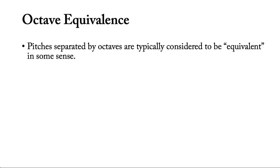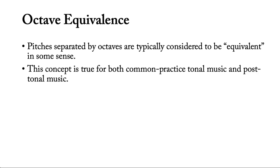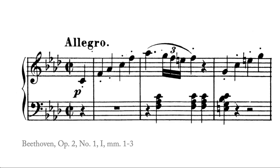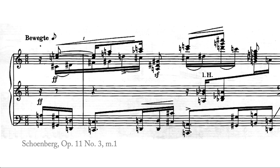This is called octave equivalence, and it's something that is considered to be part of many different kinds of music throughout the world — pitches separated by octaves are typically considered to be equivalent in some sense. This is definitely true for common practice music and for post-tonal music. For example, in this familiar piece by Beethoven, all of these notes are called F and all of these notes are called C. The F's and C's appear in multiple octaves, but in some way we consider them all to be the same. Similarly, in this piece by Schoenberg, we have F's and C's appearing in multiple octaves, and we would intuitively consider these to be equivalent as well.